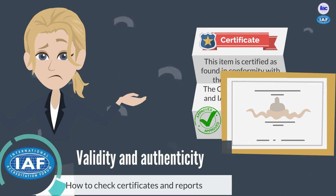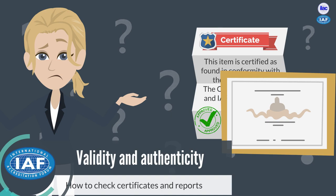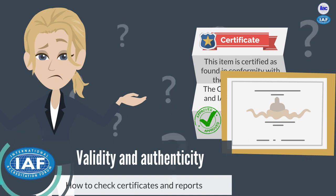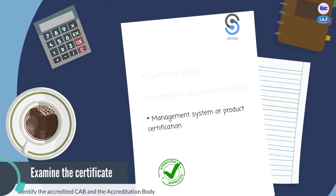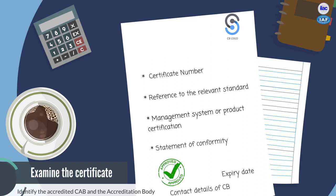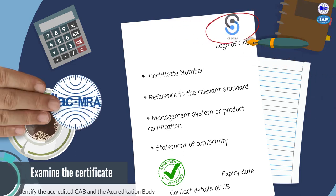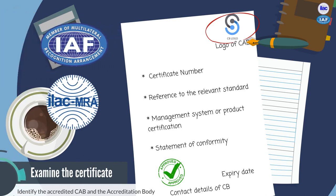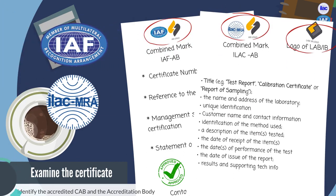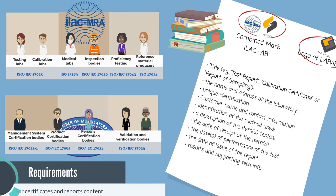Now that you know how these certificates are issued and how they are recognised worldwide, let's see how you can check the authenticity and validity of these certificates and reports. Firstly, it is important to know that accredited conformity assessment bodies are required to include specific information in their reports and certificates. In addition to the conformity assessment body logo, usually the certificates and reports, under the umbrella of the ILAC and IAF arrangements, bear the ILAC MRA or IAF MLA mark combined with the accreditation body logo.